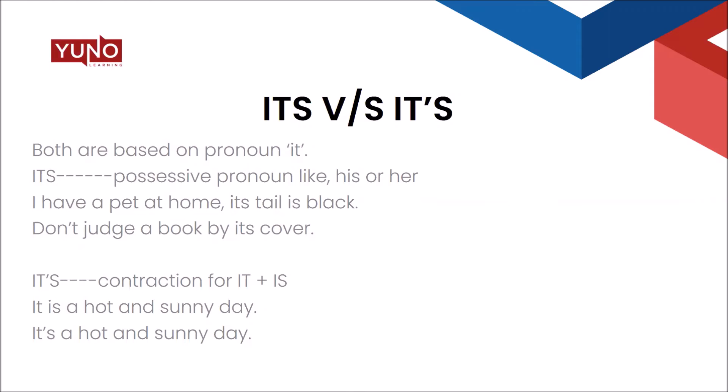The funny part is both words have exactly the same pronunciation. Both are derived from the same base pronoun 'it'. First, we talk about 'its' — I-T-S. It is a possessive pronoun, like 'his' or 'hers'. For instance: 'I have a pet at home — its tail is flat.' Here 'its' shows the possession of the tail by the pet. A very common proverb: 'Don't judge a book by its cover.' Here 'its' refers to the cover possessed by the book. That is why we use I-T-S with no apostrophe.